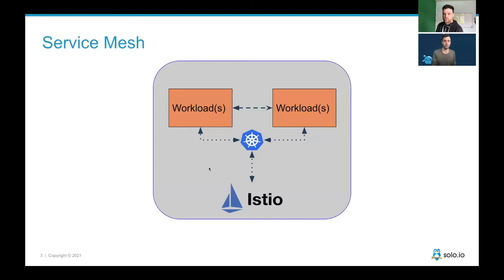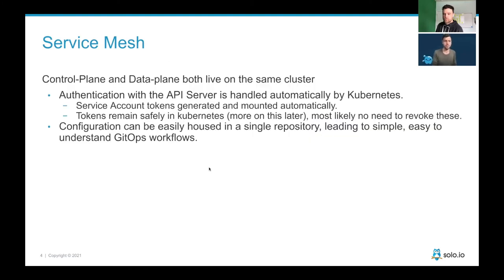In the single-cluster scenario, the control plane and data plane both live on the same cluster. Authentication with the API server is handled automatically by Kubernetes — service account tokens are generated and mounted automatically, and the tokens remain safely in Kubernetes. There's most likely no need to revoke those. And configuration can be easily housed in a single repository, leading to simple, easy-to-understand GitOps workflows.